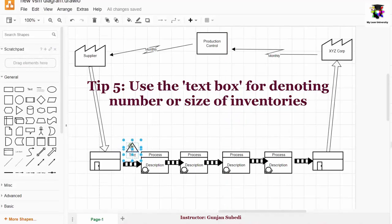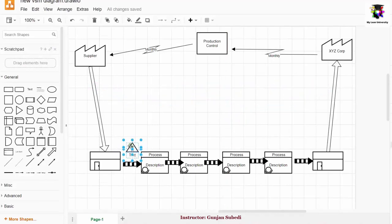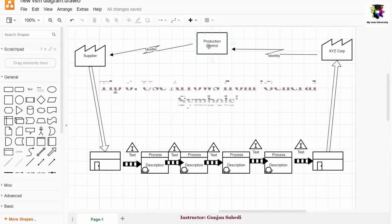After that, you can select both the text and inventory symbol. Press ctrl-c and ctrl-v to copy and paste. And drag these inventory symbols between the next processes also. So this is how we do that.